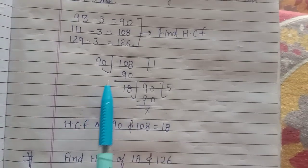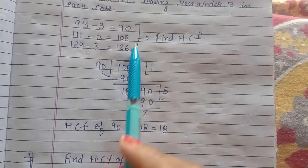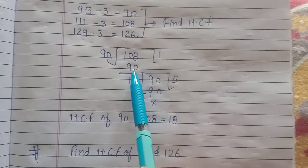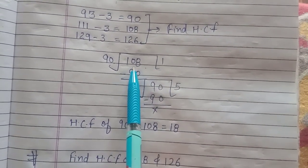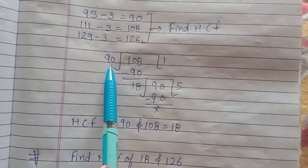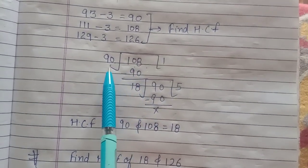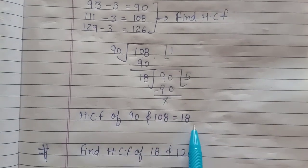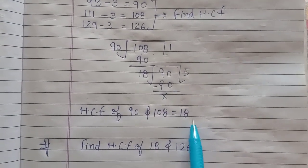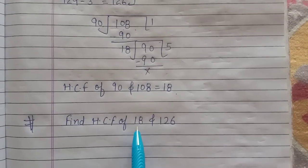I have found the HCF of the first two numbers, 90 and 108. As 108 is the greater number, it's taken as the dividend and 90 is the divisor. We get the HCF as 18. In the same way we will find the HCF of the next two numbers.